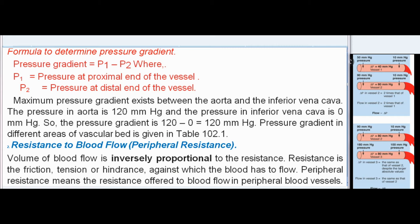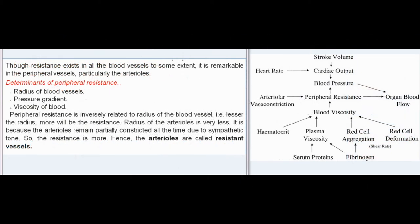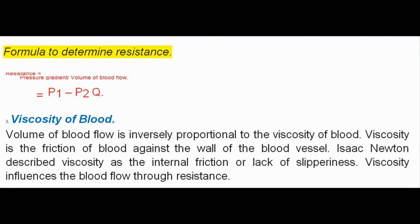Resistance to blood flow — peripheral resistance: Volume of blood flow is inversely proportional to resistance. Resistance is the friction, tension, or hindrance against which the blood has to flow. Peripheral resistance means the resistance offered to blood flow in peripheral blood vessels. Though resistance exists in all blood vessels to some extent, it is remarkable in the peripheral vessels, particularly the arterioles. Determinants of peripheral resistance: radius of blood vessels, pressure gradient, and viscosity of blood. Peripheral resistance is inversely related to radius — lesser the radius, more the resistance. The radius of arterioles is very small because they remain partially constricted due to sympathetic tone, hence arterioles are called resistant vessels. Formula: Resistance equals pressure gradient divided by volume of blood flow, equals (P1 minus P2) divided by Q.